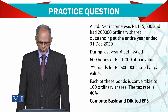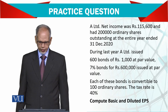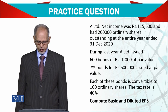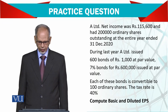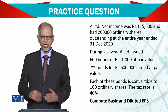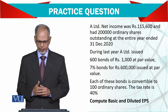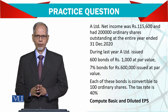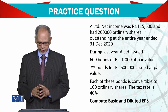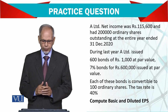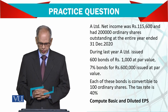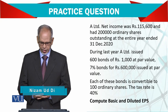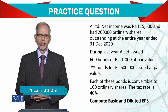During last year, A Limited issued 600 bonds of 1,000 each, with a 7% bond interest rate — so 600 bonds at 1,000 each gives 600,000 at par. Each of these bonds is convertible to 100 ordinary shares, and the tax rate is 40%.